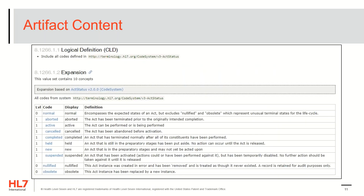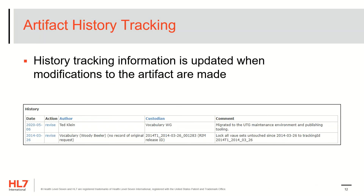For value sets, the contents include the logical definition and the expansion. The expansion is generated by the creation of these pages, so they're regenerated each time the pages are updated. The last section of a rendered artifact is the history tracking information. History tracking entries are added each time an artifact is updated using the unified terminology governance process. This can be useful for tracking changes to an artifact over time. We're looking into mining older history from the former publication process, and that might be added in the future as well.